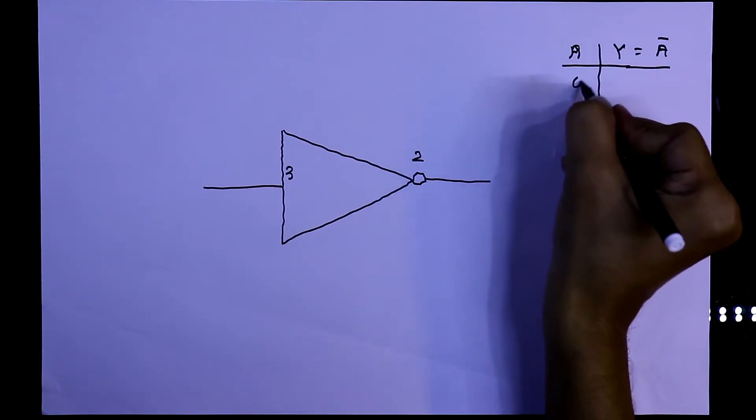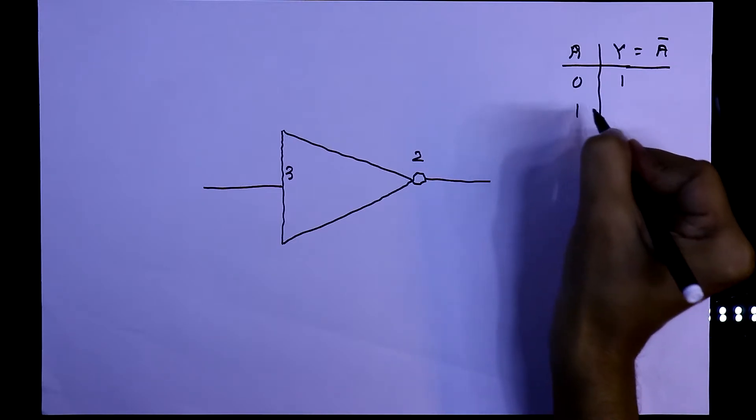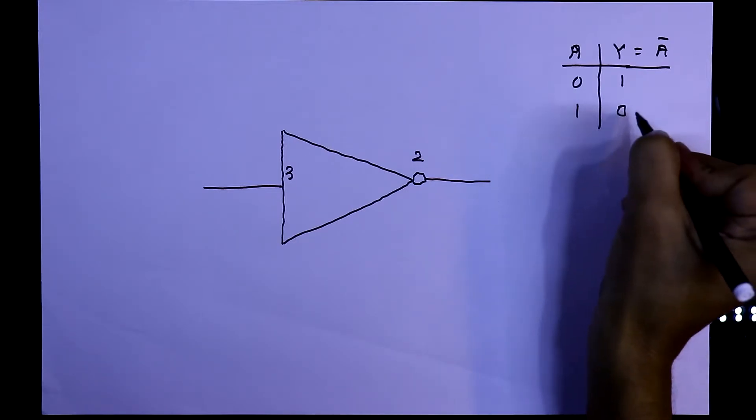If 0 is input, then 1 will be output. If 1 is input, then 0 will be output.